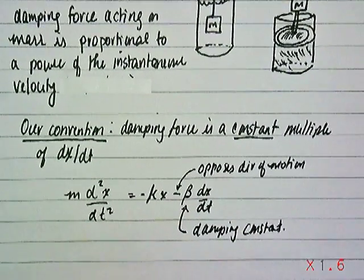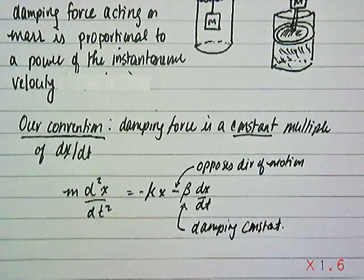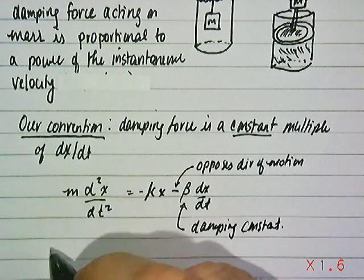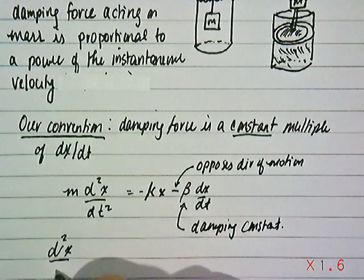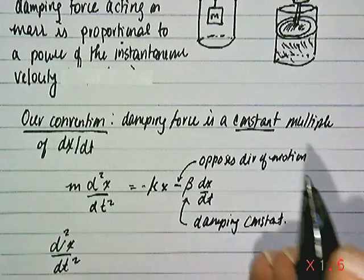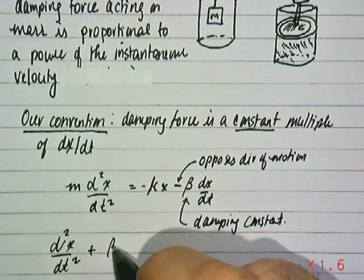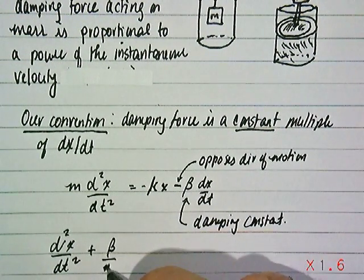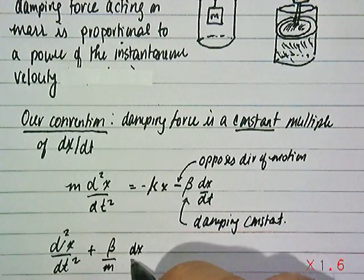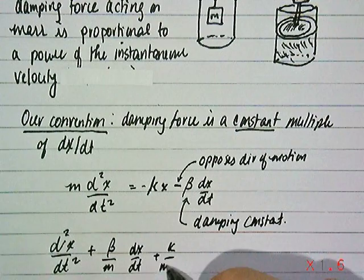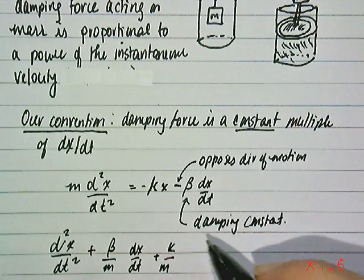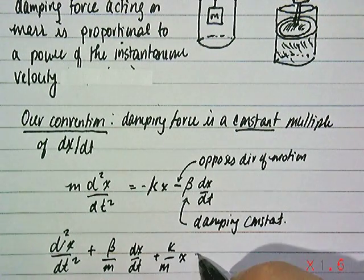So now let's rewrite this equation. We have a new term for the damping effect. If we rewrite that, we would have an equation that looks like this: second derivative of the displacement plus β/m dx/dt plus k/m, the spring constant. You have a damping constant and a spring constant, times x equals zero.